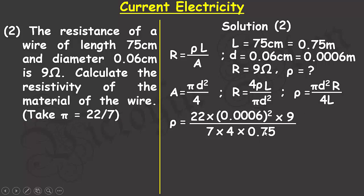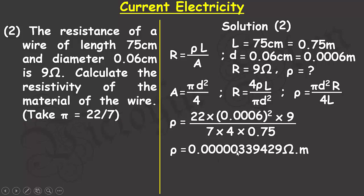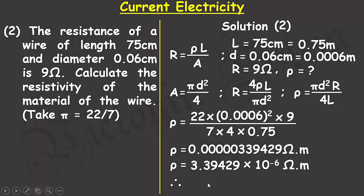Solving this fraction with a calculator gives 0.0000339429 ohm-meters. In standard form this is 3.39429 × 10⁻⁶ ohm-meters. Therefore, the resistivity of the wire to one decimal place is 3.4 × 10⁻⁶ ohm-meters. That brings me to the end of the second problem.